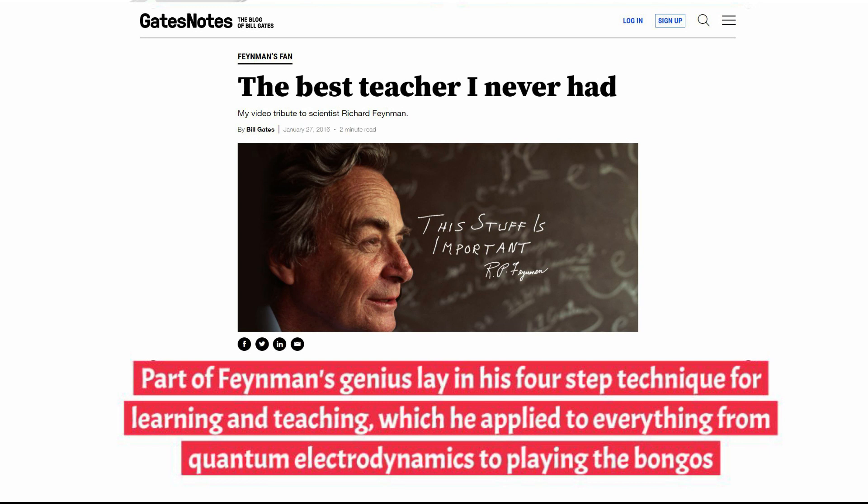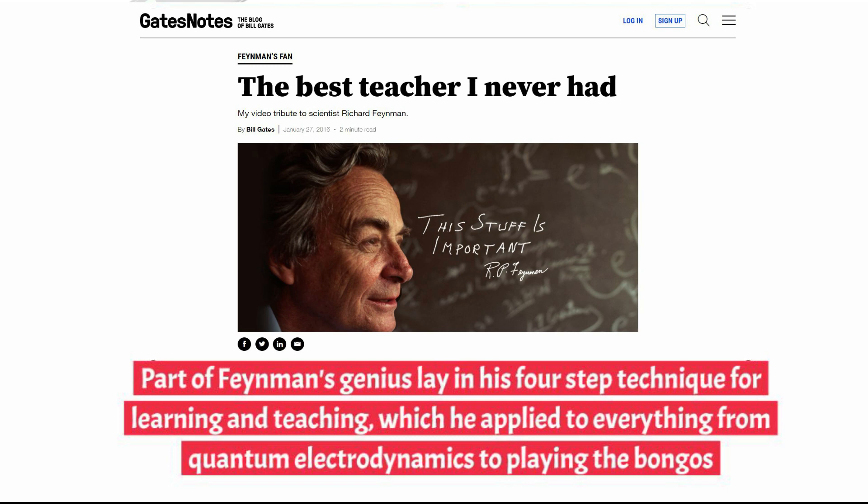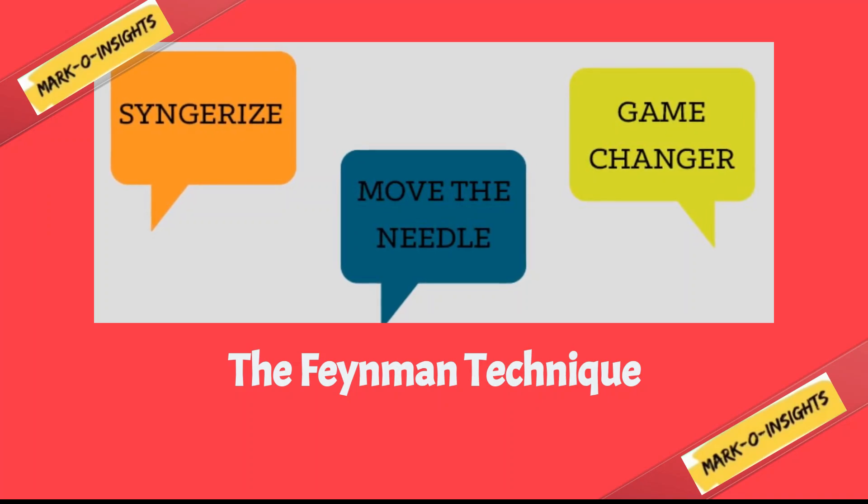Part of Richard Feynman's genius lay in a four-step technique for learning and teaching, which he applied to everything from quantum electrodynamics to playing the bongos. Let's look at the technique.